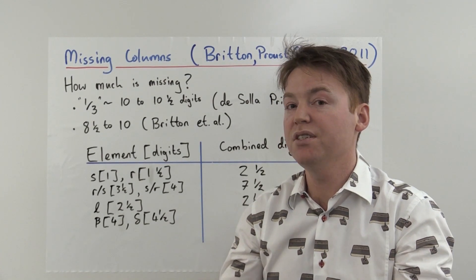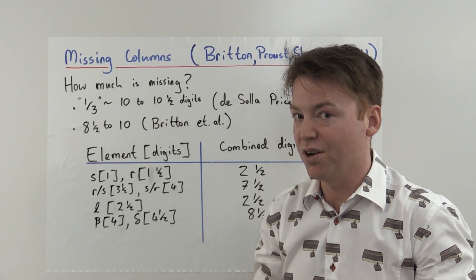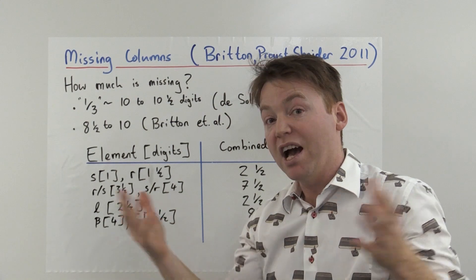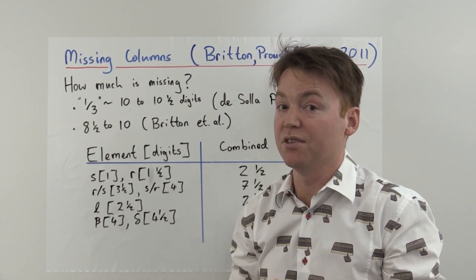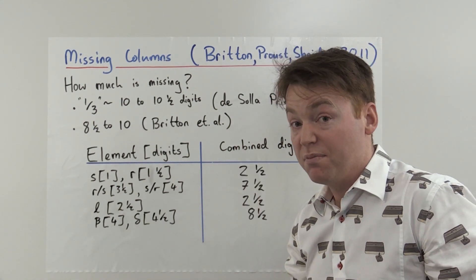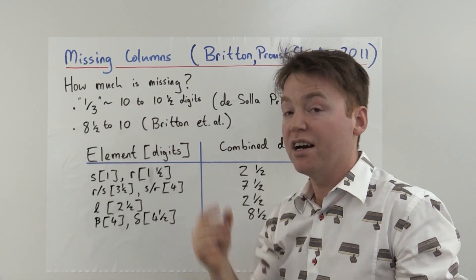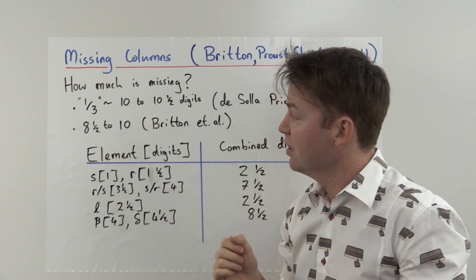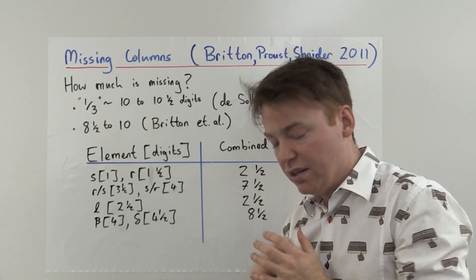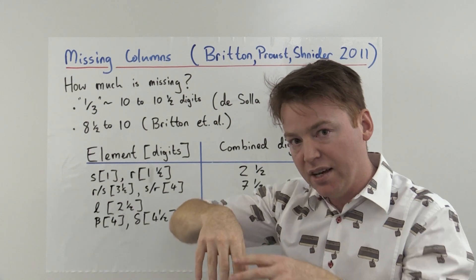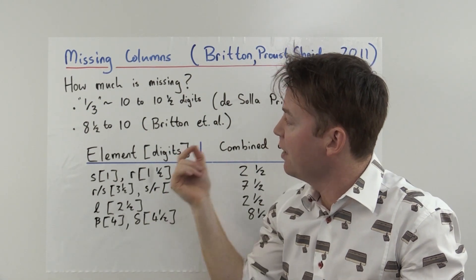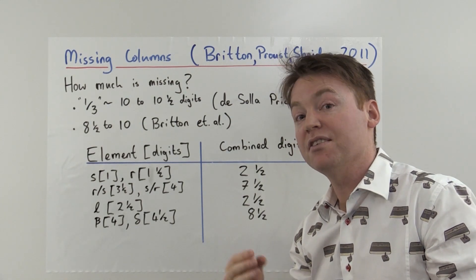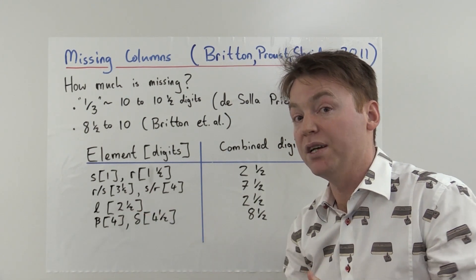De Solla Price was able to reconstruct the missing rows on Plimpton 322. So we now turn our attention to the missing columns. There's been a few theories on this. First, the first question we have to ask ourselves is how much is missing? Because that will help us to understand what could possibly be the contents. De Solla Price said that as much as a third might be missing. And this translates to between 10 to 10 and a half sexagesimal digits, where we count a digit without a tens column as half a digit. Britton, Proust and Schneider had a closer look at this tablet and measured the width, and using the symmetry of the tablet were able to refine this between 8 and a half to 10 sexagesimal digits.